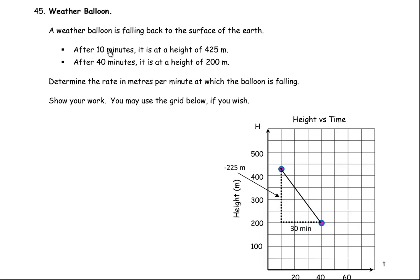We are told after 10 minutes it is at a height of 425 meters. After 40 minutes it is at a height of 200 meters above the ground. You are asked to determine the rate in meters per minute at which the balloon is falling. You are supposed to show your work and you can use the grid below if you wish.